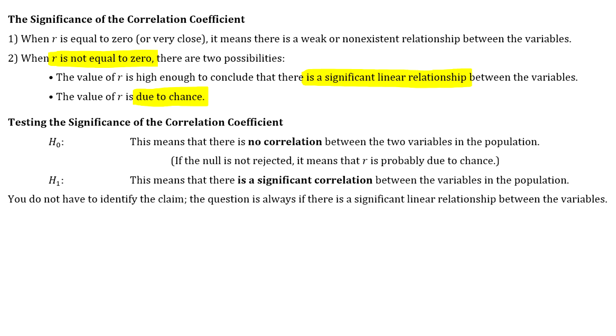This is a pretty easy hypothesis test in comparison to Chapter 8 and Chapter 9. The null hypothesis is always going to state that rho equals 0. In other words, what that means is we're stating there's no correlation between the two variables.